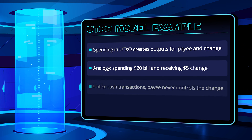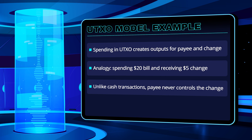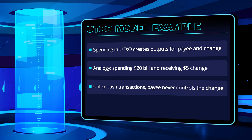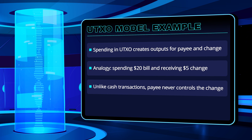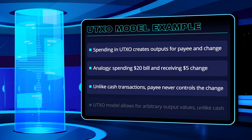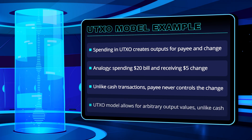However, there are two key differences. First, in a cash payment, you rely on the payee to return the change, while in the UTXO model, the payee is never in control of the change. Second, while cash exists in defined denominations, transaction outputs in the UTXO model can have arbitrary values.